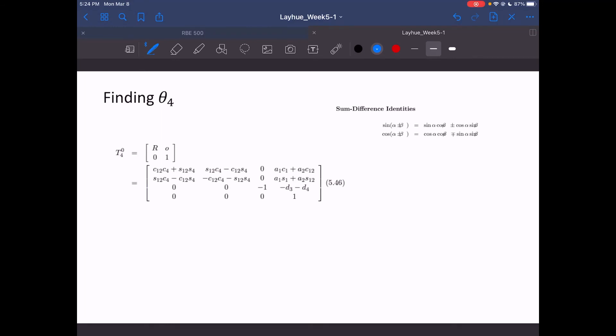So now we will start finding theta4. With theta4, we are going to use the transformation matrix that the book provided here. This is equation 5.46. One thing to note, I prefaced this demonstration with different identities for trig. So here we will be using the sum and difference identities, and it's going to give us a lot simpler answer. Just looking at this top 3 by 3 rotation matrix of our transformation matrix, we can see that we have multiple products of cosine and sine respectively. Let's take this first element, first row, first column.